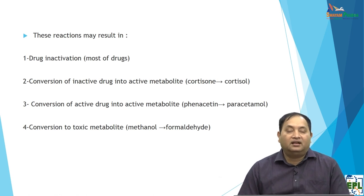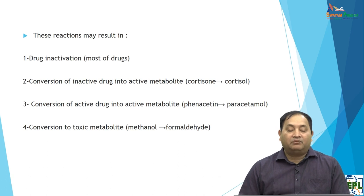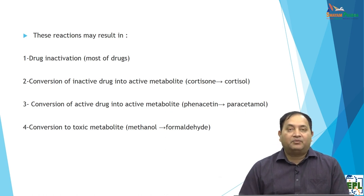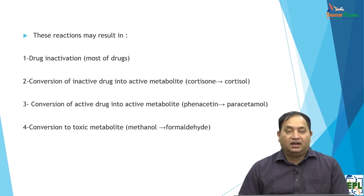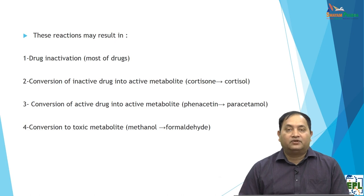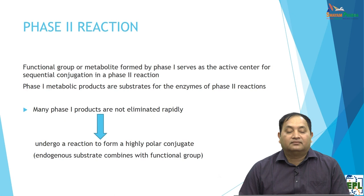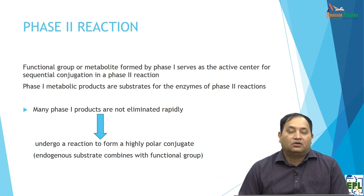Phase 2 reactions result in the drug becoming inactive, though some drugs do release active metabolites, as already discussed. Examples include: cortisone converted to the active drug cortisol; phenacetin converted to the active metabolite paracetamol; and the conversion to toxic metabolites, such as methanol forming formic acid which affects the eyes. In Phase 2, functional groups produced in Phase 1 serve as active centers for sequential conjugation reactions.